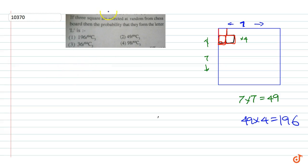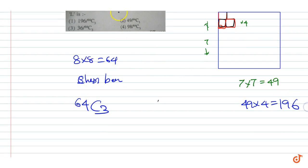Now, three squares can be selected from—there are a total of 64 squares in a chessboard. Three squares can be selected from 64 squares in 64C3 ways. Therefore, the probability of selecting three squares such that they form the letter L is given by